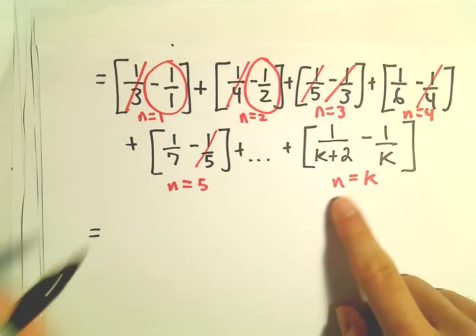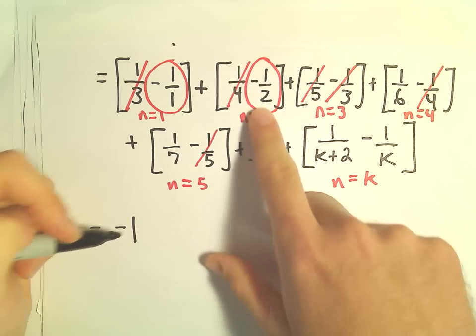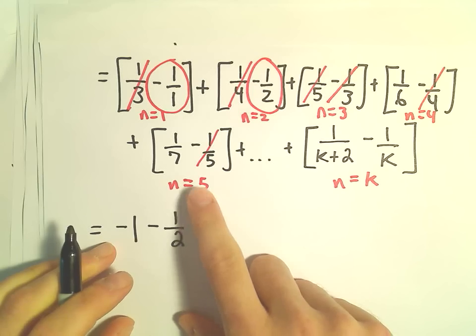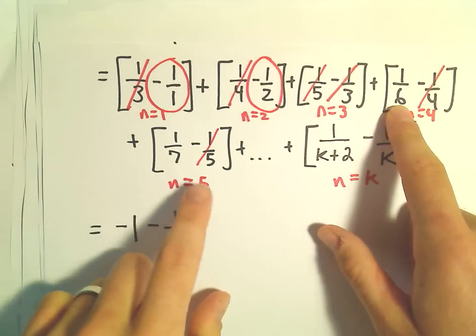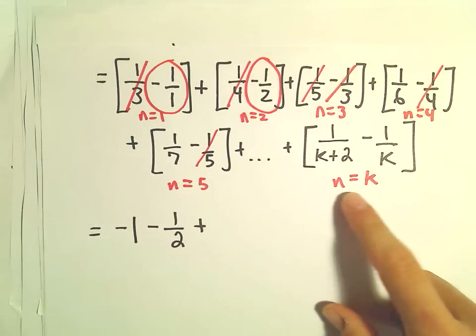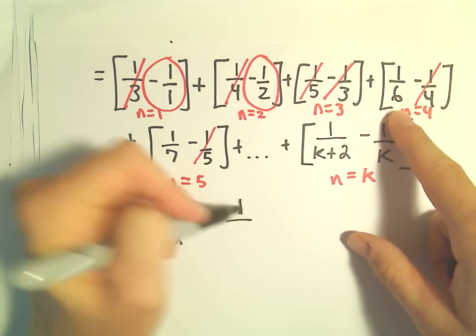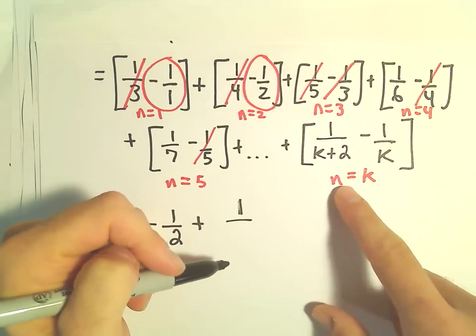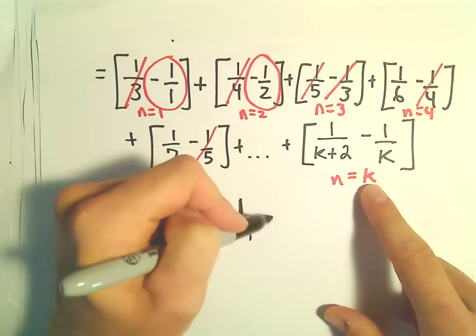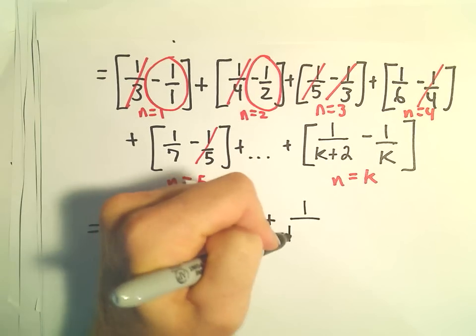The negative 1, nothing would cancel out with it. The negative 1 half would always be there. But then, just like if we stop at 5, we're left with sort of one bigger in the denominator and then two bigger in the denominator, a sixth and a seventh. If we go all the way up to n equals k, we're going to be left with positive 1 over, well, sort of one larger in the denominator. So k plus 1, and then we also have sort of two larger in the denominator. So k plus 2.